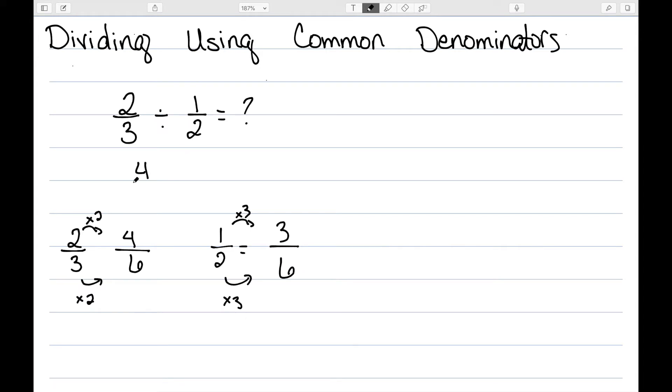So this would be 4/6 divided by 3/6. Since they have a common denominator, this is going to be the same as just 4 divided by 3, or 4/3.